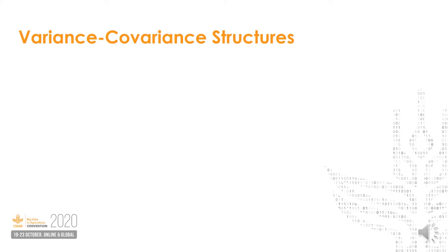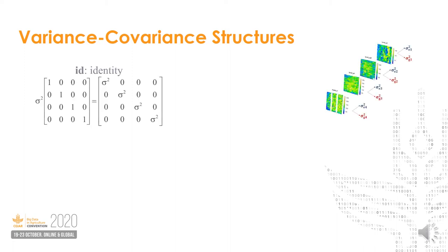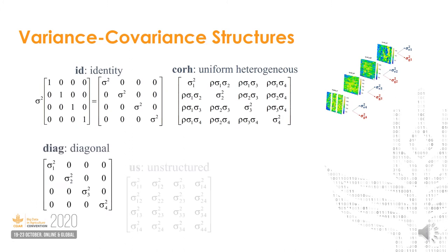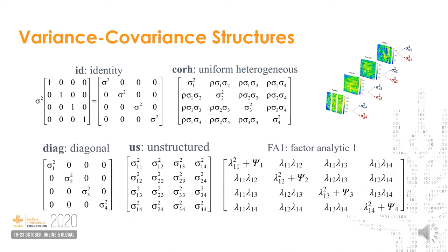It's important to mention that Mr. Bean allows us to model different variance-covariance structures for modeling the G by E, the genotype by environment pattern. In that sense, we can find identity matrix, the correlation matrix, diagonal matrix, unstructured matrix, and also factor analytic structures — factor analytic number one, two, and four.